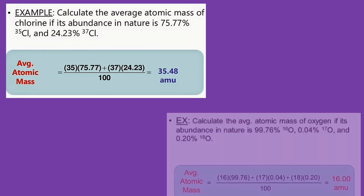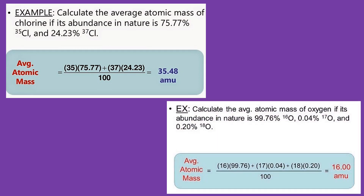In our second example, calculate the average atomic mass of oxygen if its abundance in nature is 99.76% for oxygen-16, 0.04% for oxygen-17, and 0.20% for oxygen-18. Performing the calculation, we have 16 atomic mass units for oxygen.